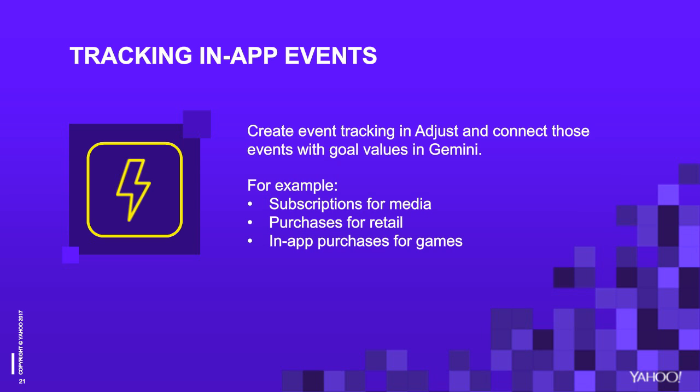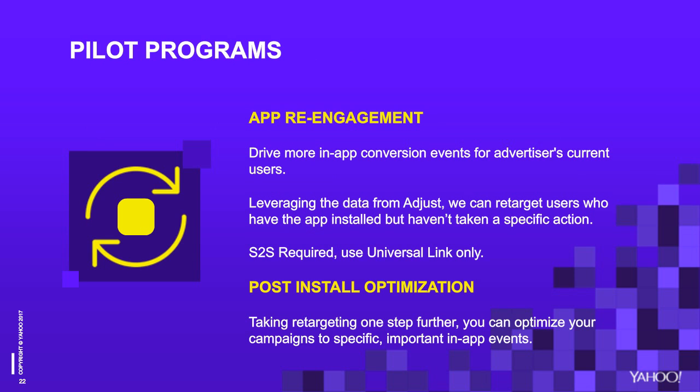We have two new pilot features that continue to highlight the importance of your Adjust SDK: app re-engagement and post-install optimization. For app re-engagement, the server-to-server integration with Adjust informs Gemini which users downloaded your app. This gives you the opportunity to re-engage users who have already expressed interest in your app but haven't taken a specific action, all to help increase acquisition and encourage retention. For post-install optimization, our algorithm goes beyond the impression, beyond the click, and beyond the install into the key action that drives your business. Using a pixel ID from Gemini, Adjust sends over event-level data, making sure we deliver to your KPIs. And as a side note, we have carousel ads available to pilot as well.